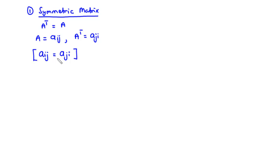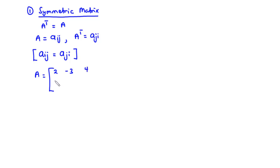A typical example of a symmetric matrix is matrix A, which is a 3 by 3 matrix containing elements 2, negative 3, 4, negative 3, 1, 2, 4, 2, 3.